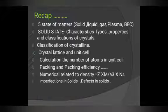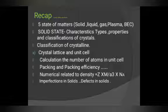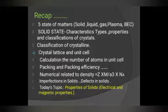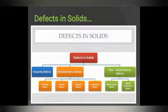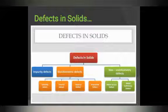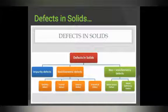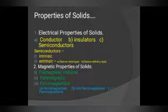Let's start with a recap. We covered the five states of matter, solid state chapter, classification, crystal lattice and unit cell, calculation of number of atoms, packing efficiency, density numericals, imperfections in solids, and defects in solids. Today we are doing properties of solids — electrical and magnetic properties. In defects of solid, we studied three types: impurity defect, stoichiometric defect, and non-stoichiometric defect.